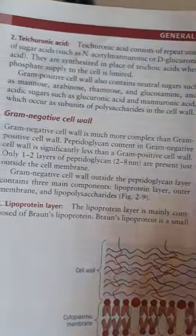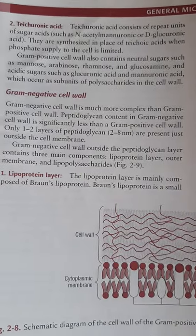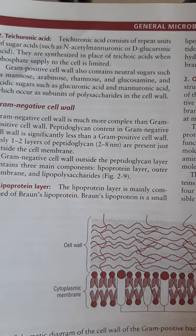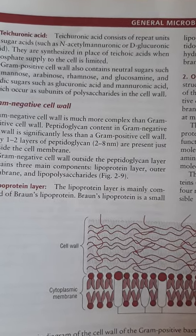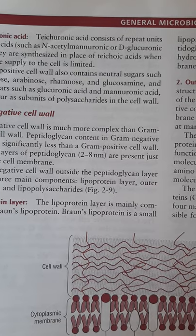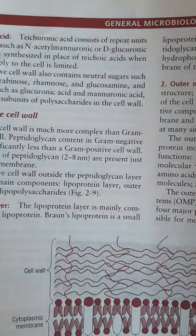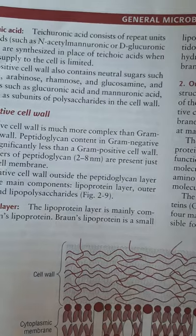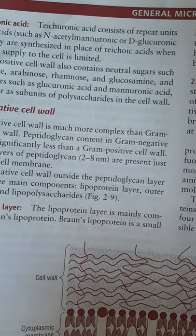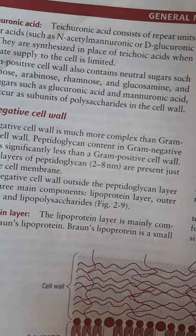Trichromic acid contains repeated units of sugar acids such as N-acetylmuramic or D-glucuronic acid. They are synthesized in place of teichoic acids when phosphate supply to the cell is limited. Gram-positive cell walls also contain neutral sugars such as mannose, arabinose, rhamnose and glucosamine, and acidic sugars such as gluconic acid and manuronic acid, which occur as subunits of polysaccharides in the cell wall.